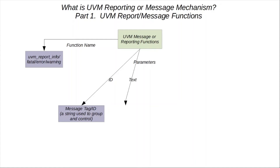The next parameter is text or the message content. This is also a string type and provides the detailed message that gets printed in the body of a UVM message. An example would be the expected versus actual value at a particular memory address or register — you can print out what the address is, what the actual value is, and what the required value was, and then an error is generated.